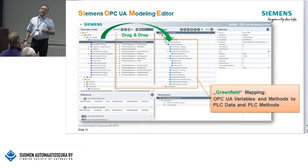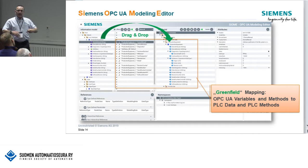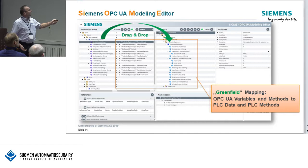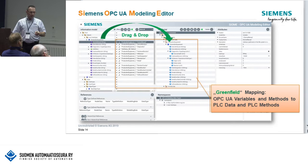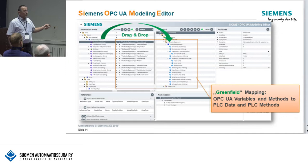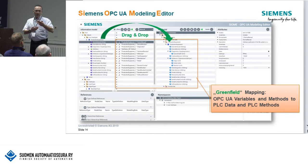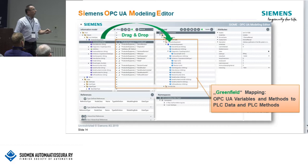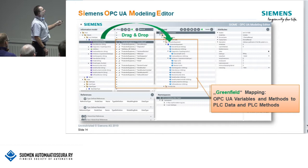There are also two possibilities: one we call greenfield mapping, where you have something in the instance model and you want to build a completely new machine. There you can just drag and drop an object to TIA Portal — TIA Portal is the software where you program and maintain our PLCs. Automatically all data blocks, user-defined data types, structures, and methods are generated in your PLC program via drag and drop. The other way is the so-called brownfield mapping, for an already existing machine setup, and there are two possibilities for brownfield mapping.